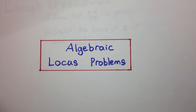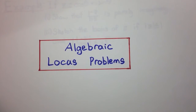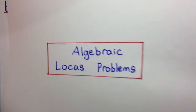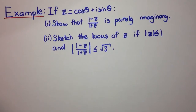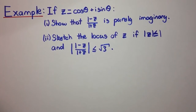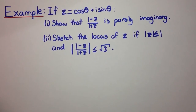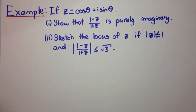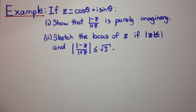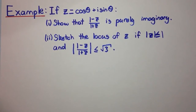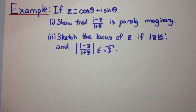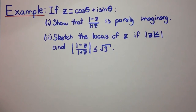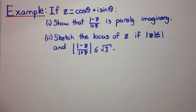Welcome to today's video everyone. In this video we're seeing another example of an algebraic locus type problem. This example says: if z equals cos theta plus i sine theta, show that (1 minus z) over (1 plus z) is purely imaginary. Part 2: sketch the locus of z if the modulus of z is less than or equal to 1, and the modulus of (1 minus z) over (1 plus z) is less than or equal to root 3.